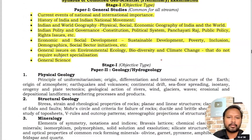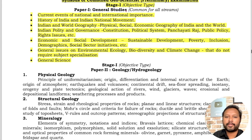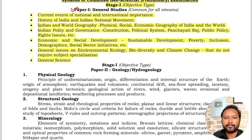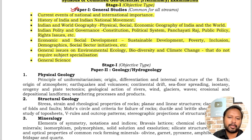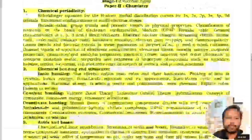For Stage 1, the objective-type general studies paper covers: current events of national and international importance, history of India, India and world geography, Indian polity, economic and social development, general issues, and general science.